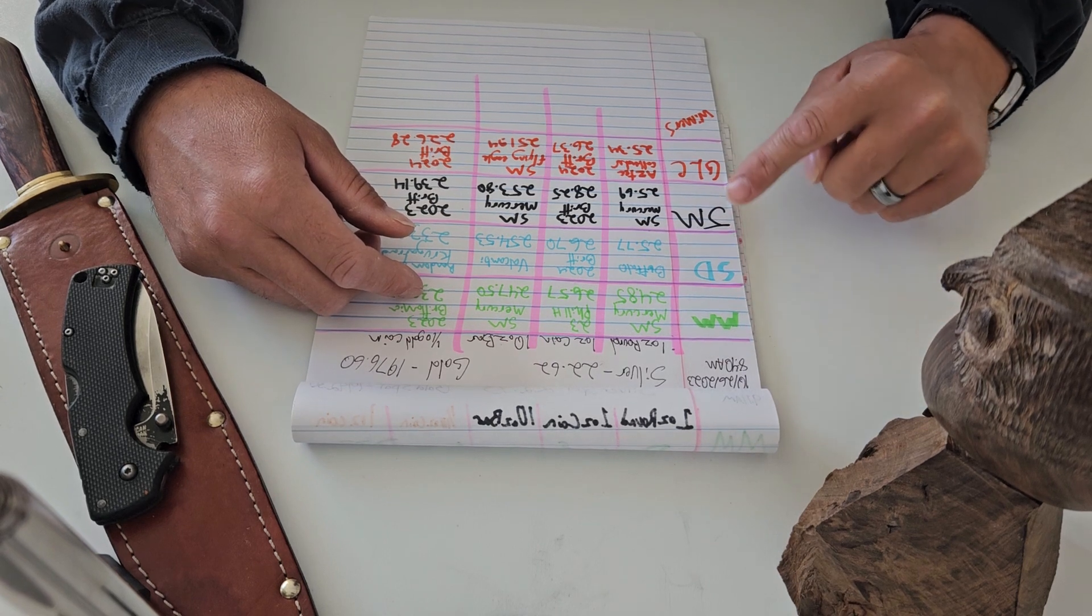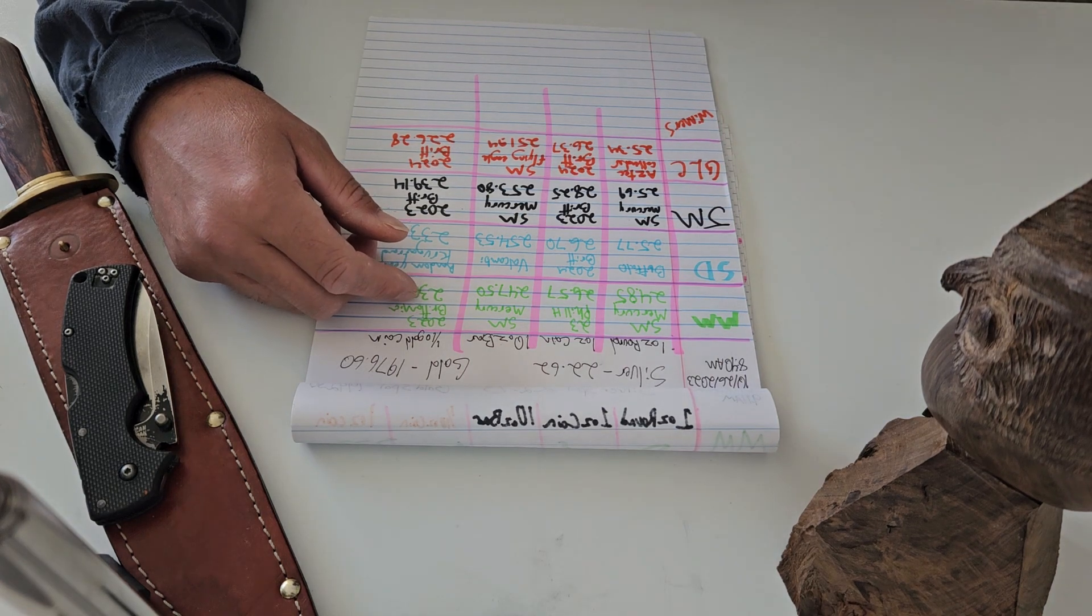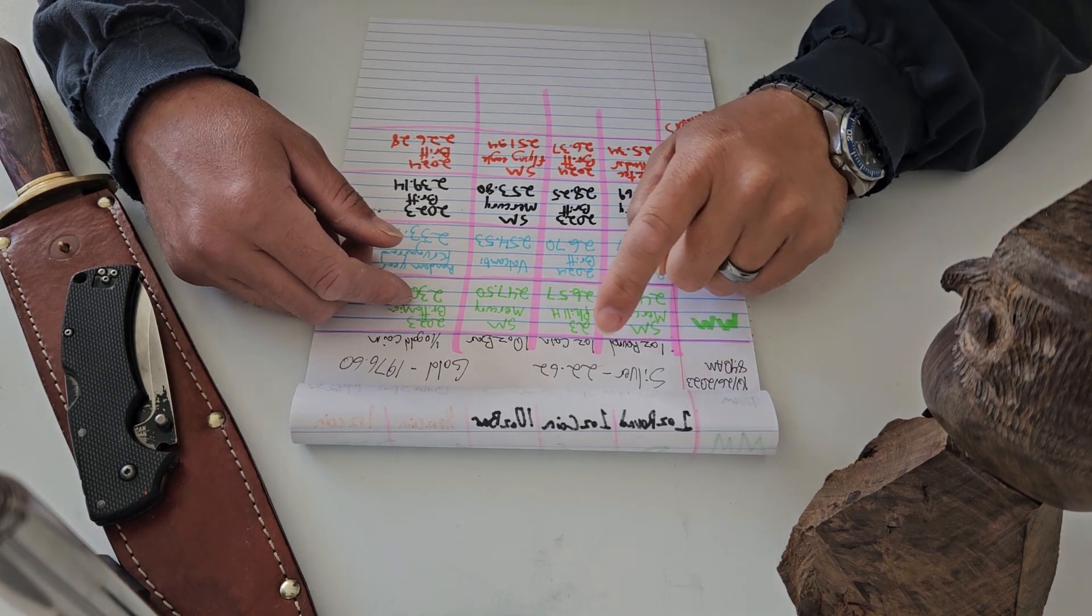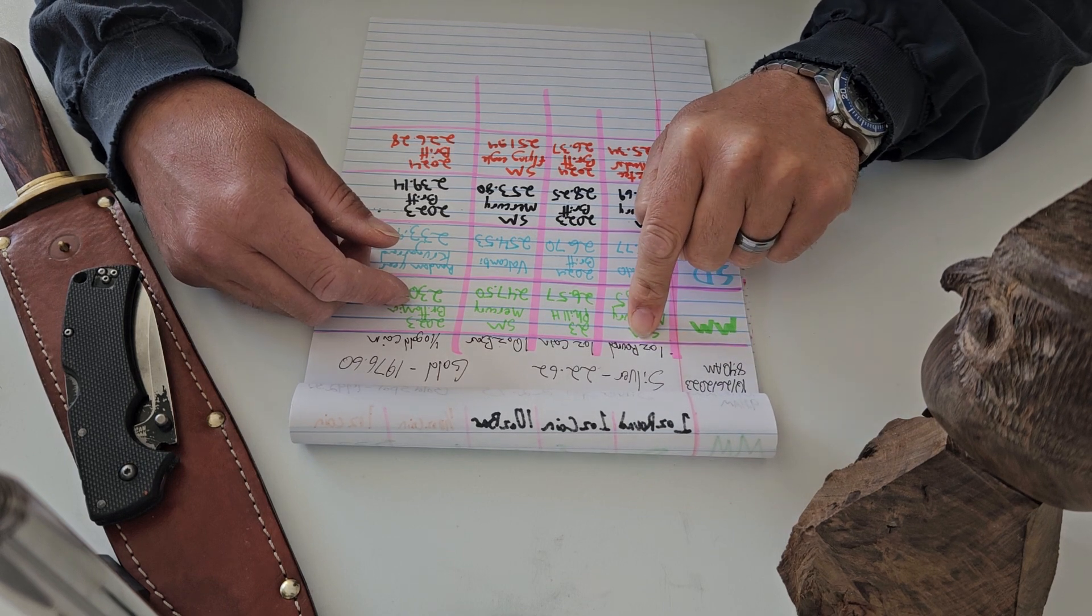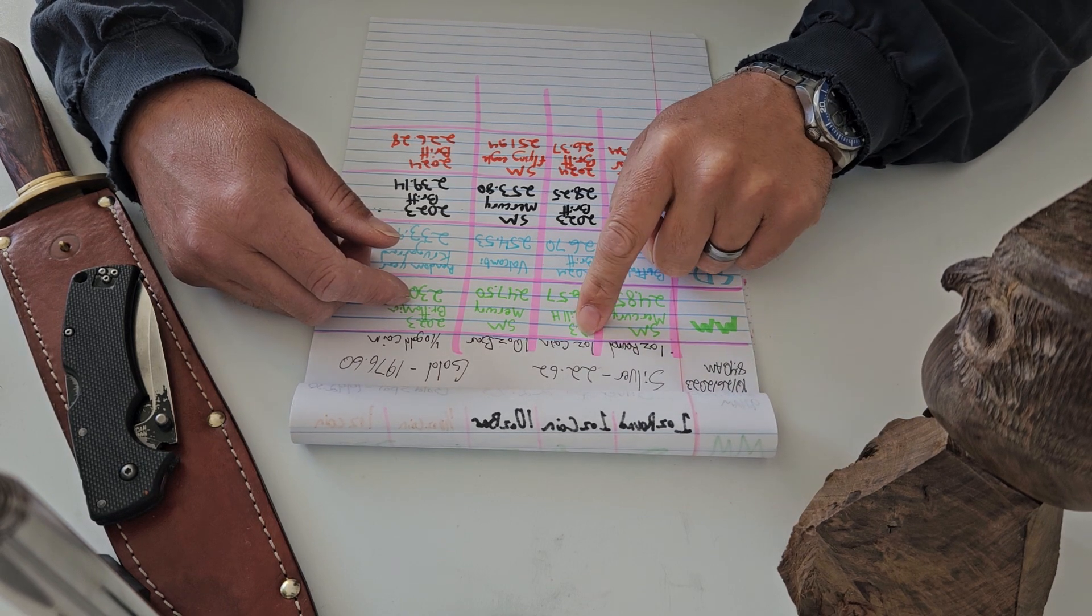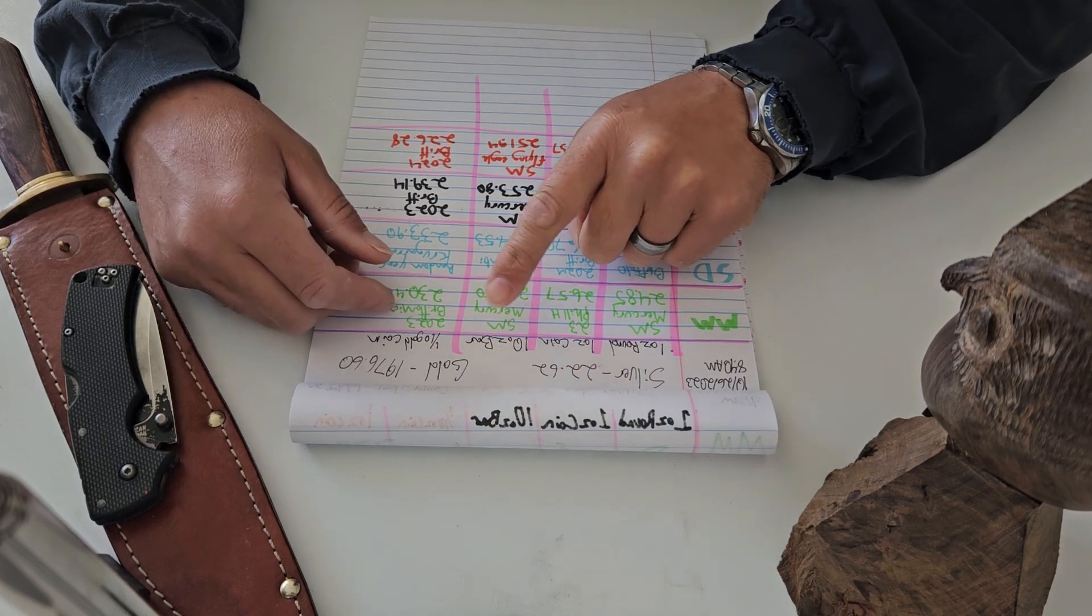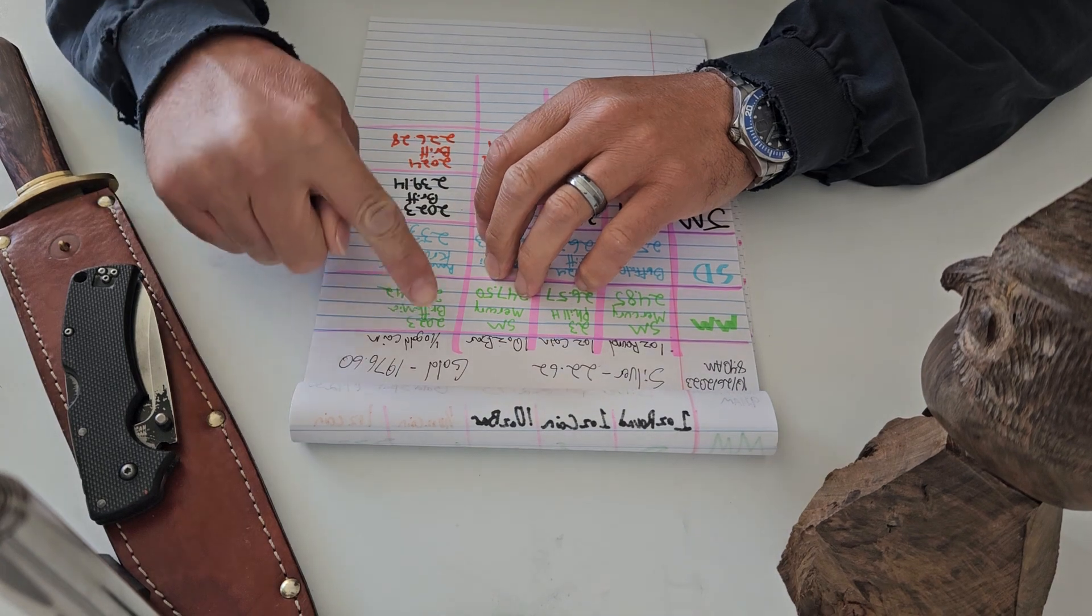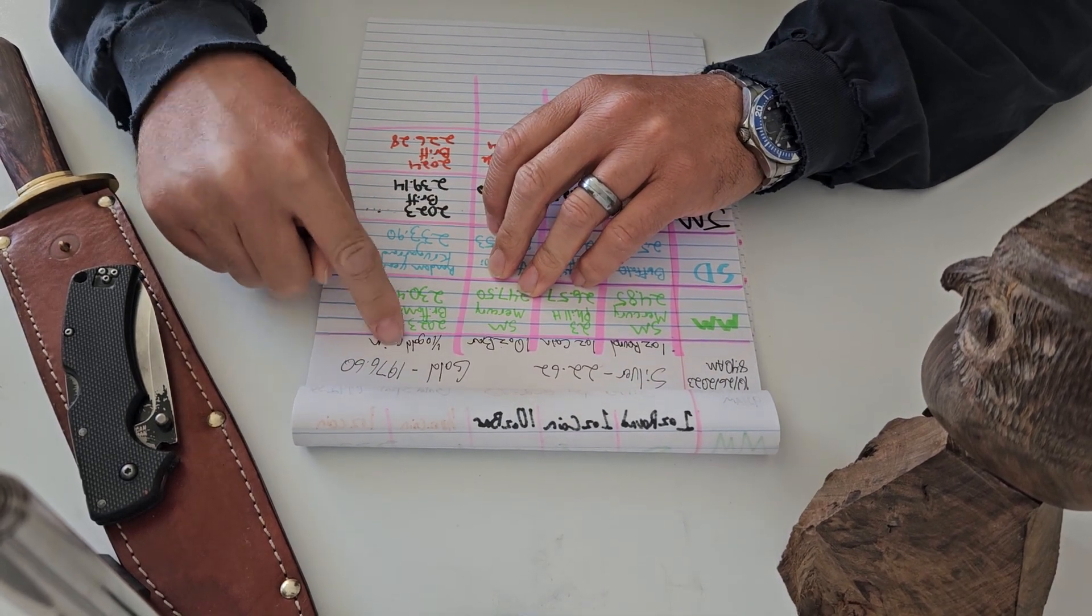Monument Metals, SD Bullion, JM Bullion, Great Lakes Coins. And we're going to be covering 1-ounce rounds, 1-ounce coins on the silver. 1-ounce silver round, 1-ounce silver coin, 10-ounce silver bar. I should write down that silver, it helps me out. And then a 1/10-ounce gold coin. Broke stacker, not the bar stacker, so we're not doing the 1-ounce.